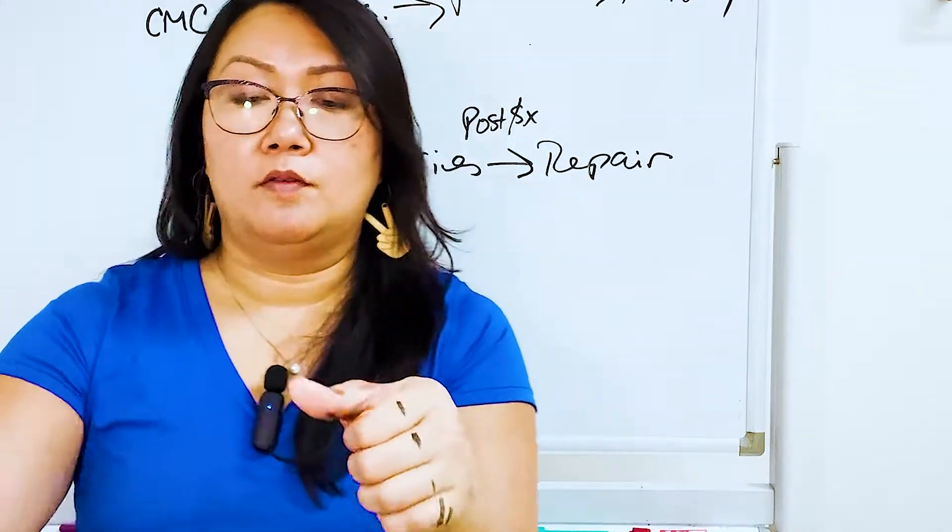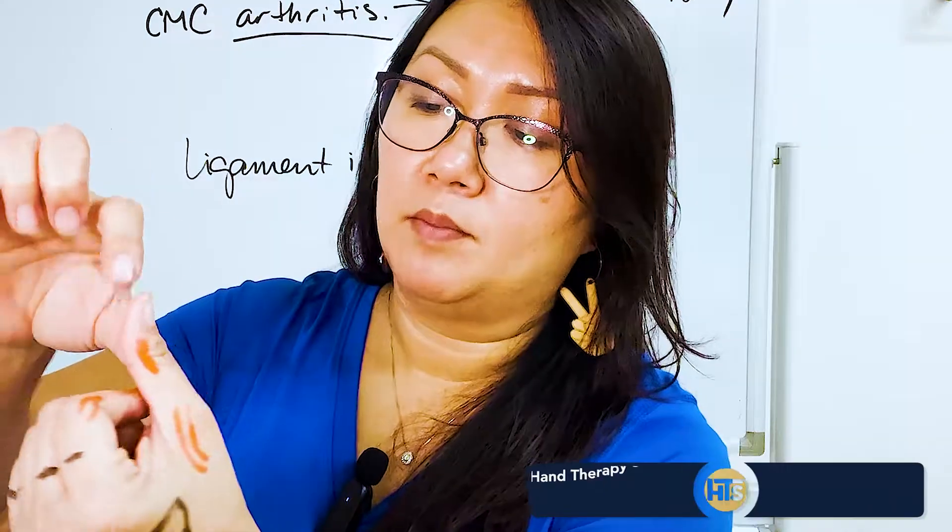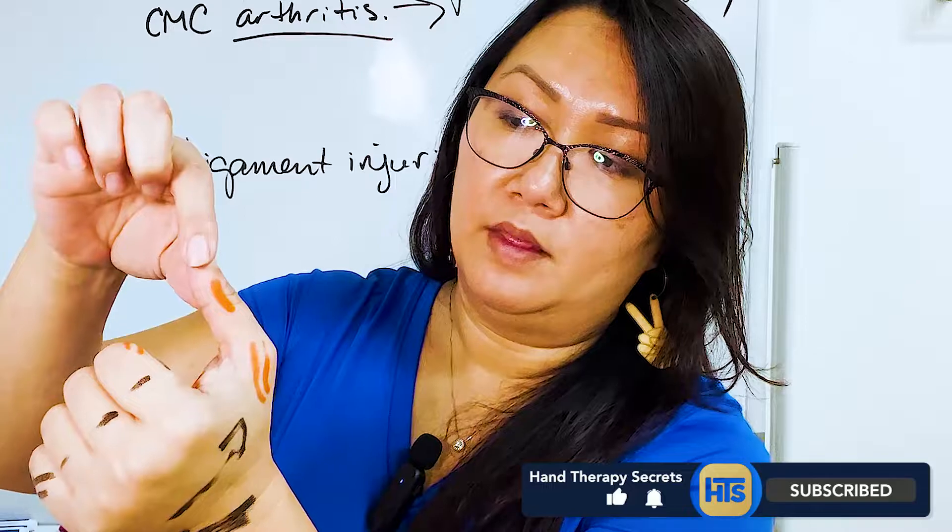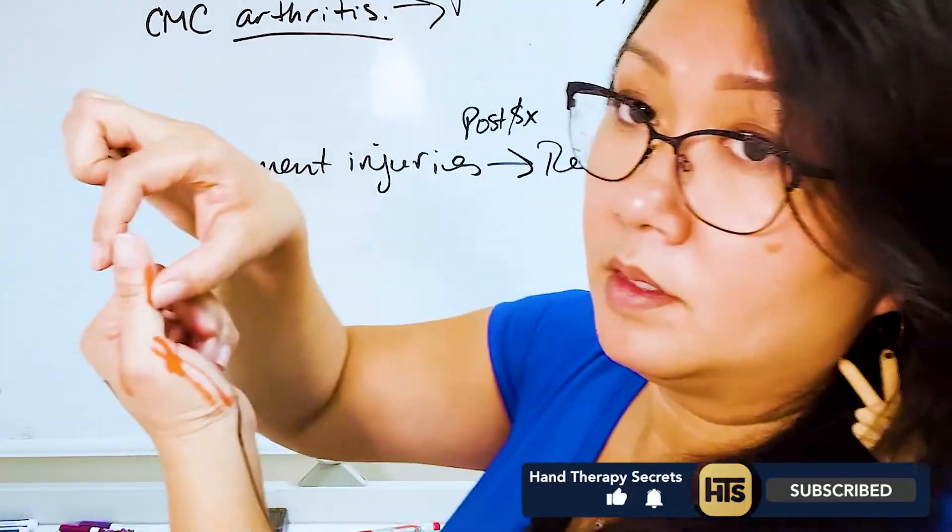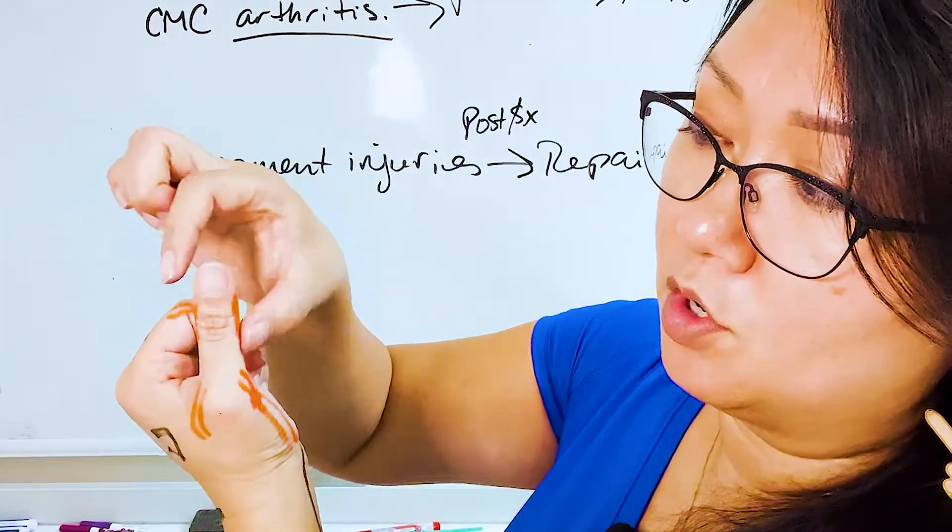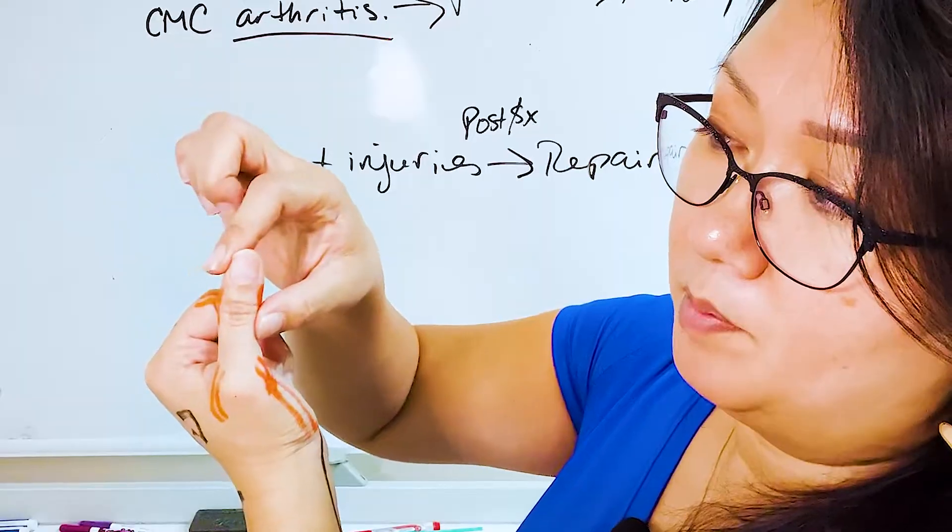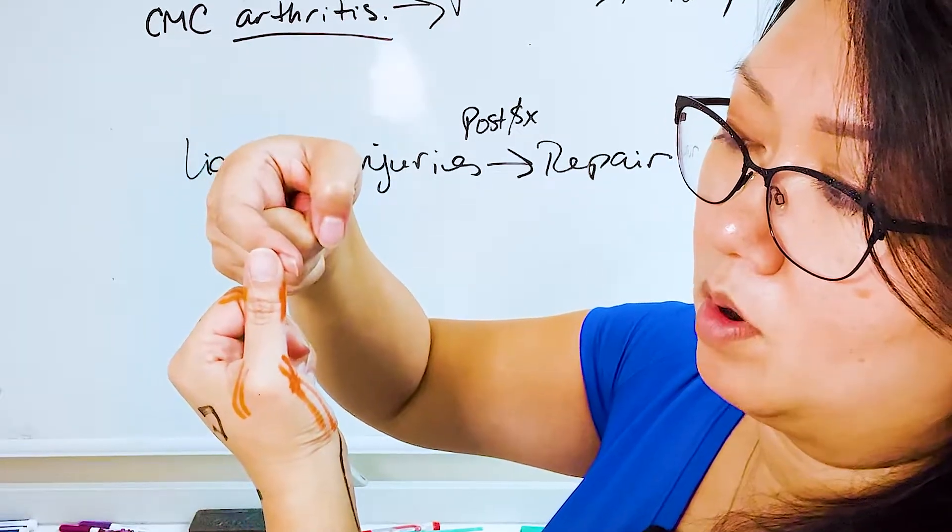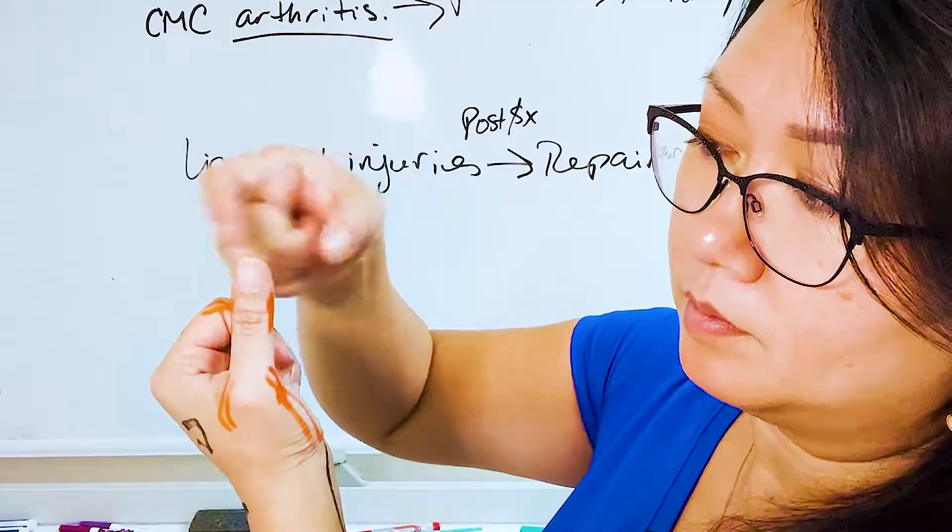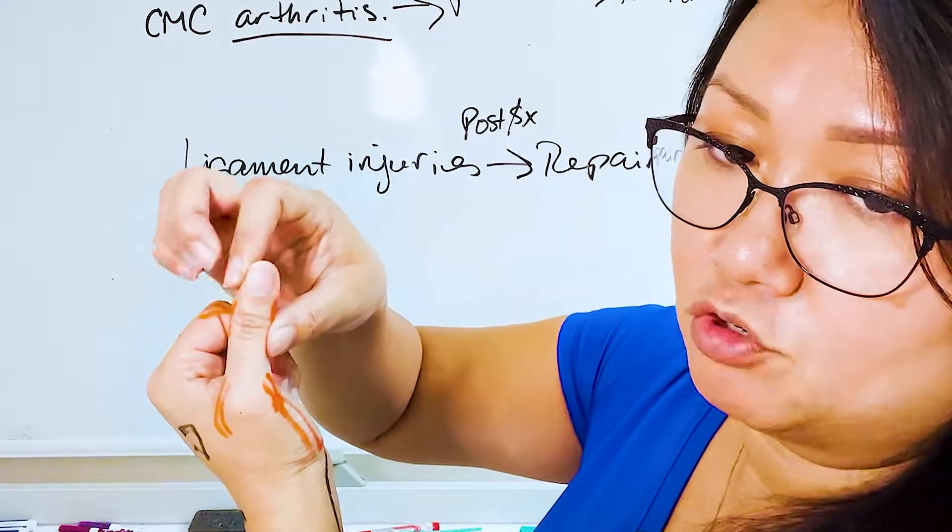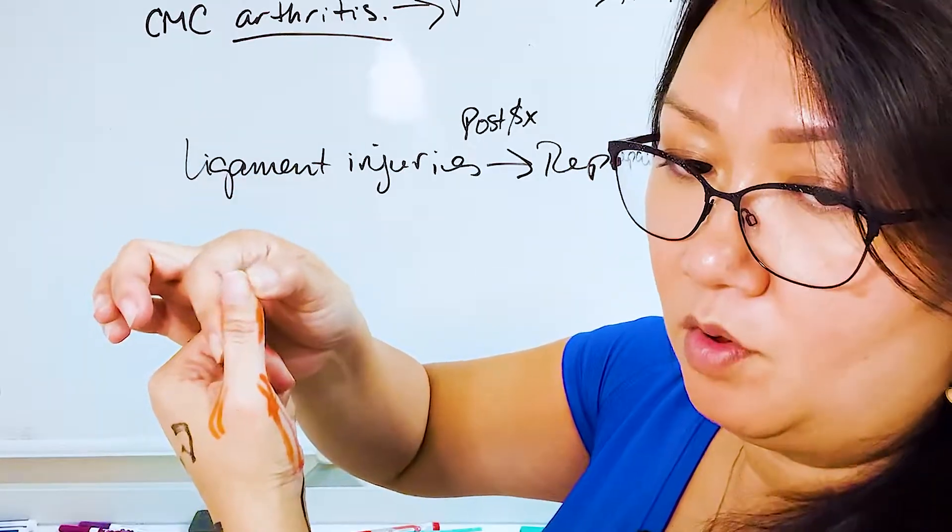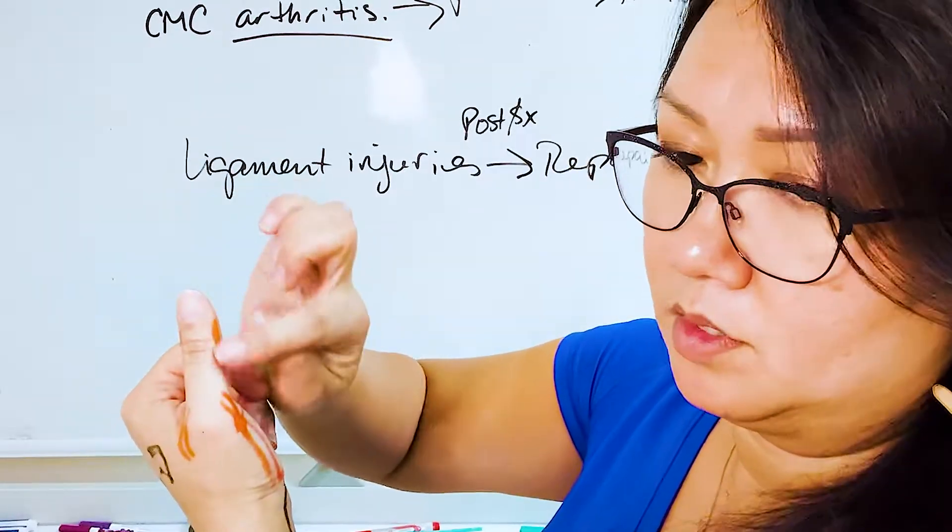So if anything happens, just like you can test it by stabilizing this bone, the proximal bone, and then moving the distal end and seeing. So if I pull the IP more volar towards me, then I stress this side, the ulnar side of the IP. If I test it the other way, then I'll stress this one.